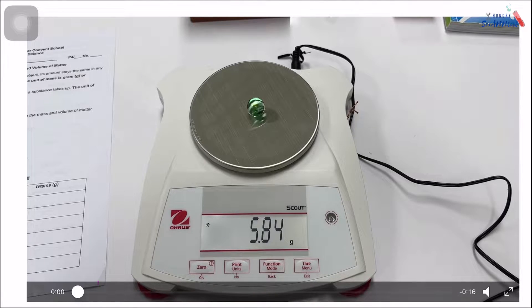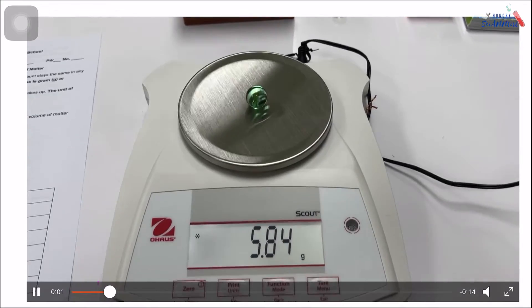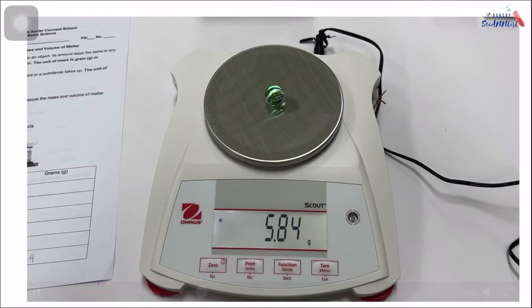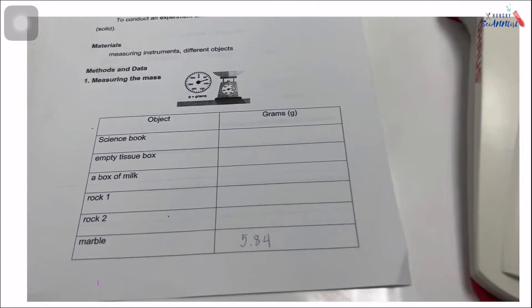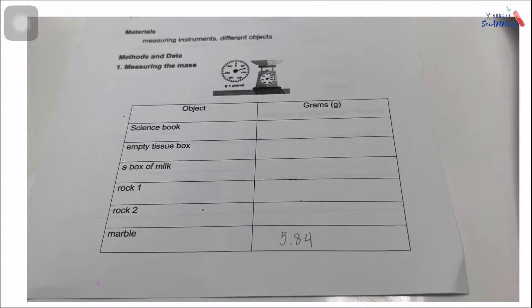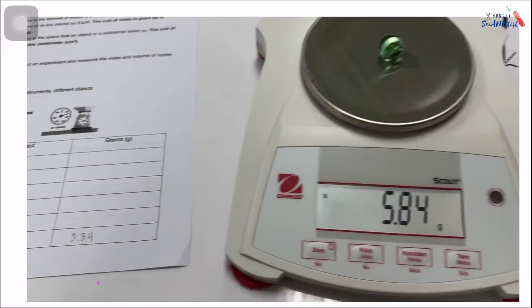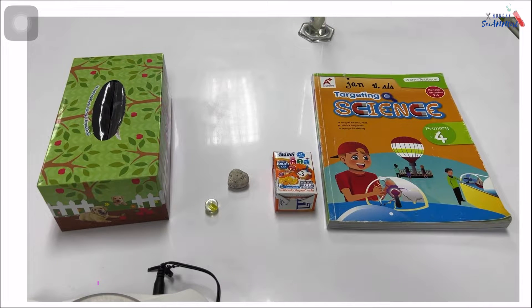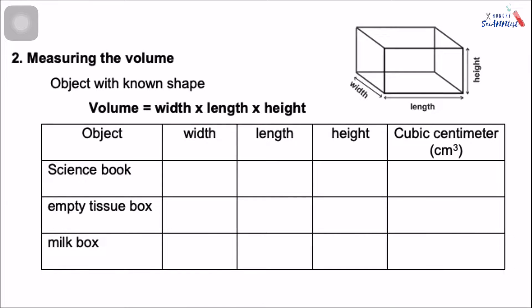Let's look at this video. So you are going to place your object on the weighing scale. Get the mass and write it on your worksheets. Once you are done, we can go now to part 2.